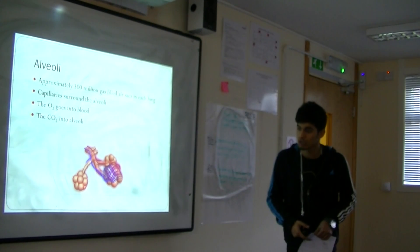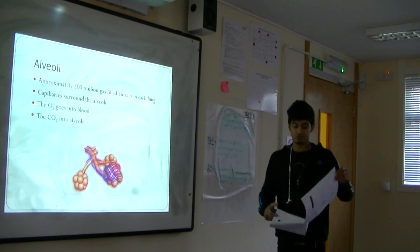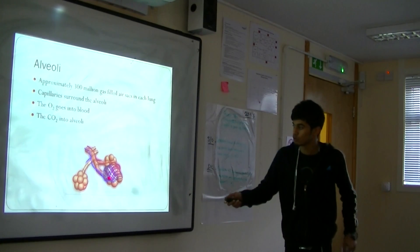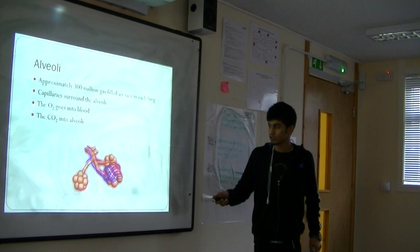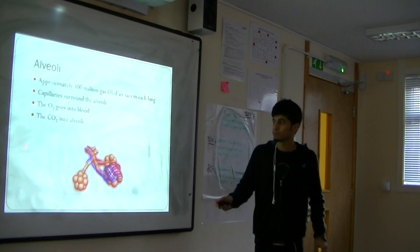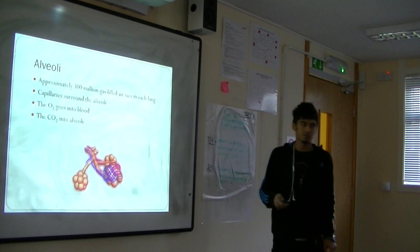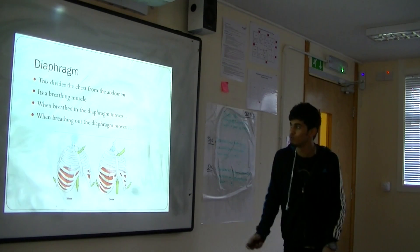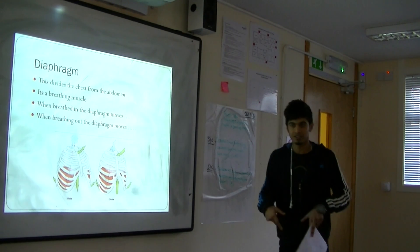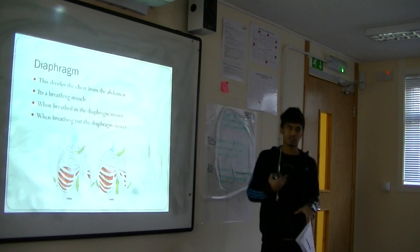There are approximately 300 million alveolar sacs in each lung, so around 600 million in total. Oxygen goes from the alveoli into the capillaries, while CO2 diffuses back into the alveoli and back into the lungs to be exhaled. The diaphragm — when we breathe in, the diaphragm moves down, expanding the chest. When we breathe out, the diaphragm moves up, which reduces the chest cavity.